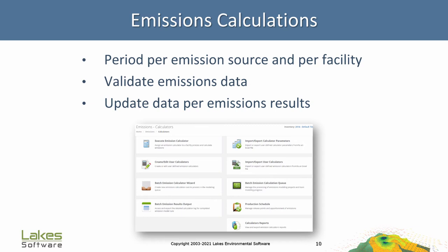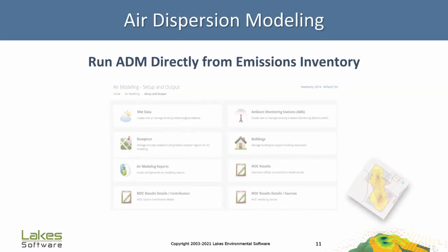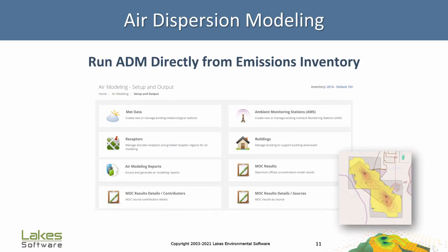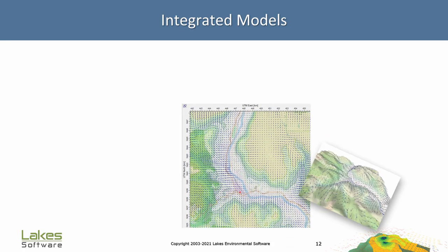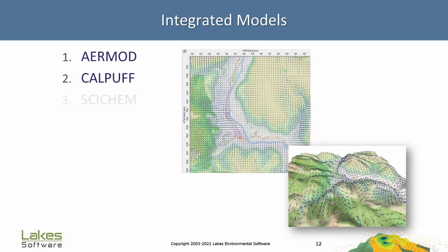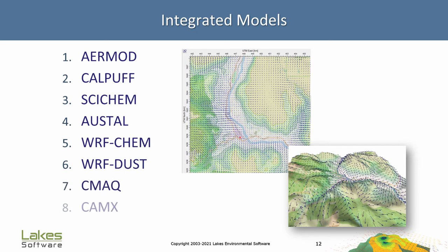If you know how to use Excel, adding calculators for your specific cases is very simple. The Air Dispersion Modeling Dashboard provides a system to quickly execute any integrated model using all the facility data and calculated emissions. And when we say any integrated model, we mean it. Beyond Gaussian models like AERMOD and CALPUFF, AQMIS can support a number of atmospheric models like SCICHEM, the German model AUSTAL, photochemical models like WRF-Chem, CMAQ, CAMx, and more.